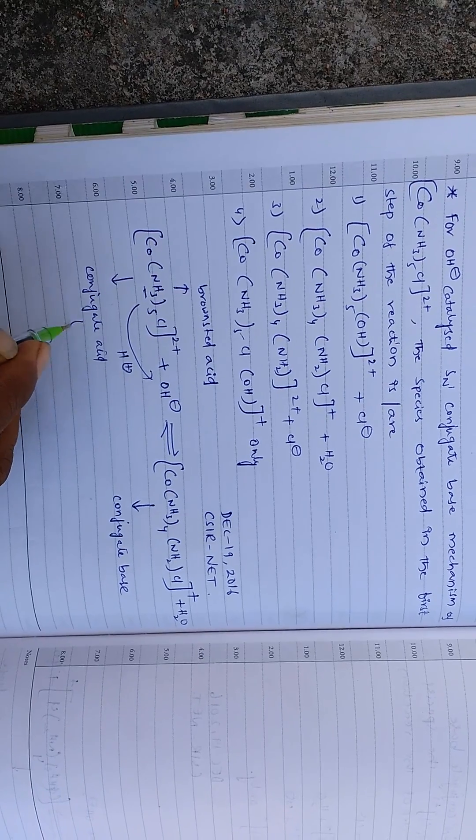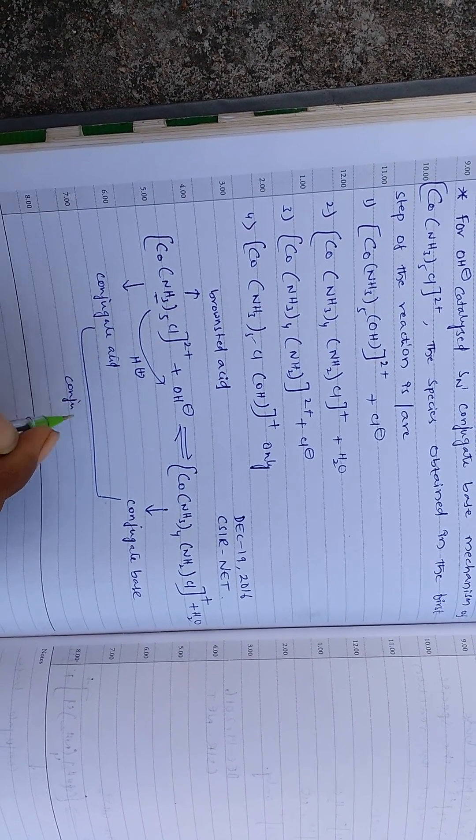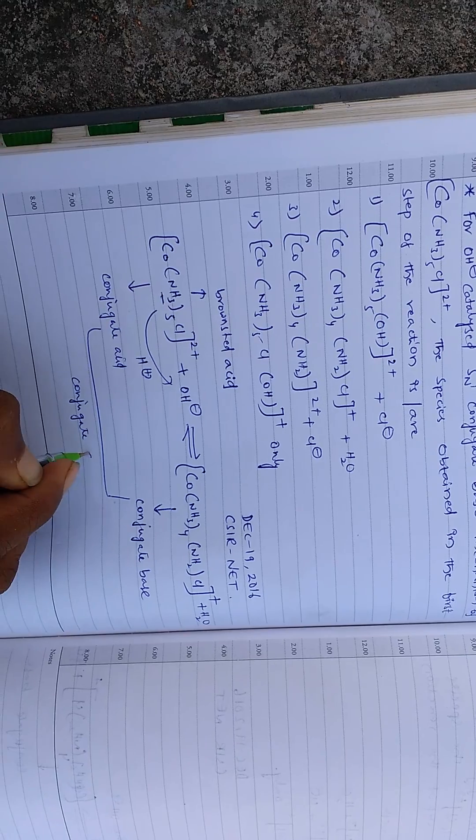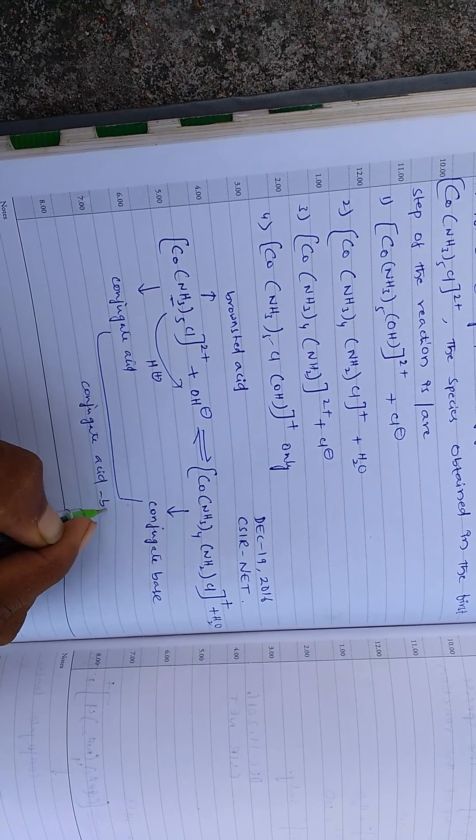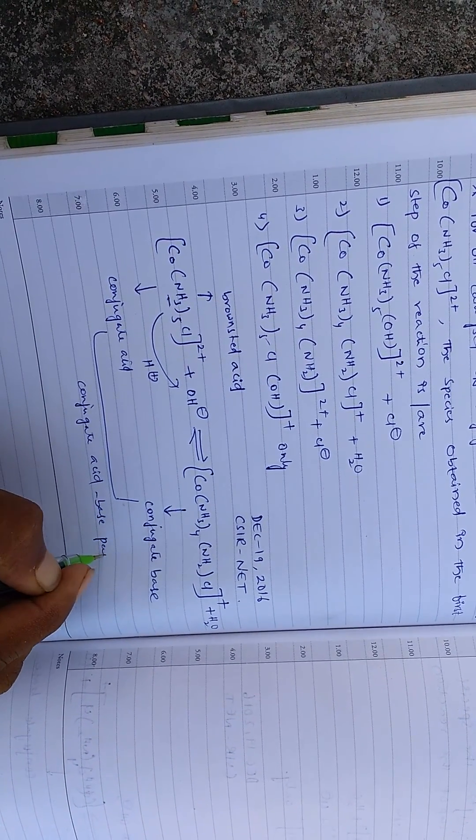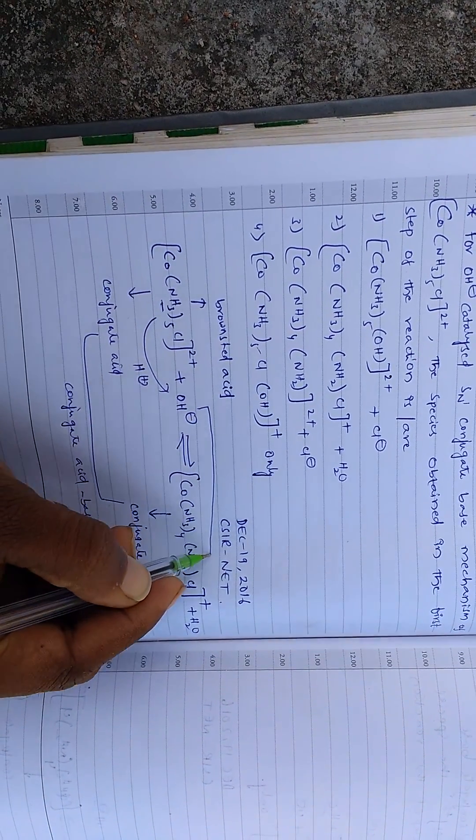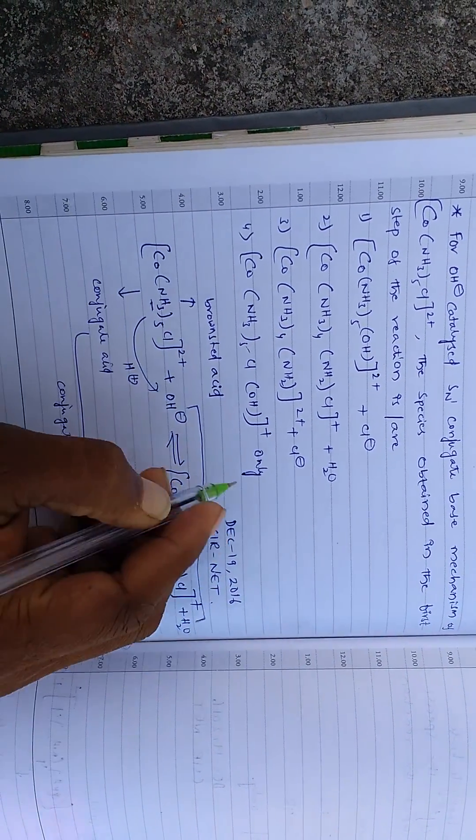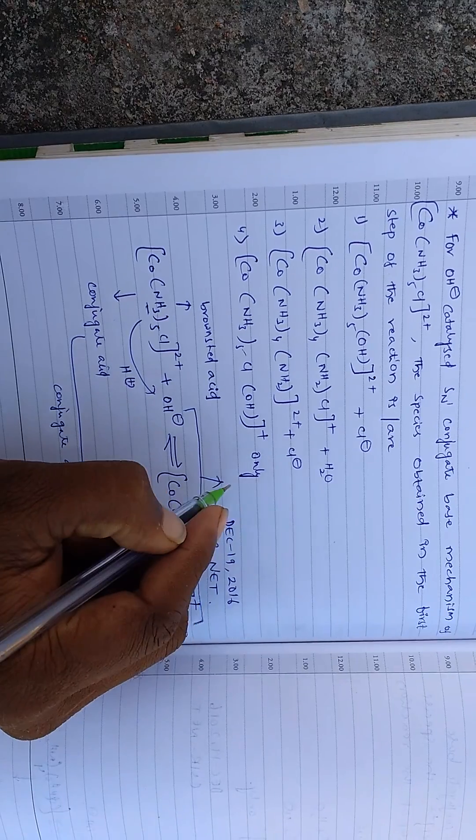These two are conjugate acid-base pair. The same time, OH minus and water are the conjugate acid-base pair.